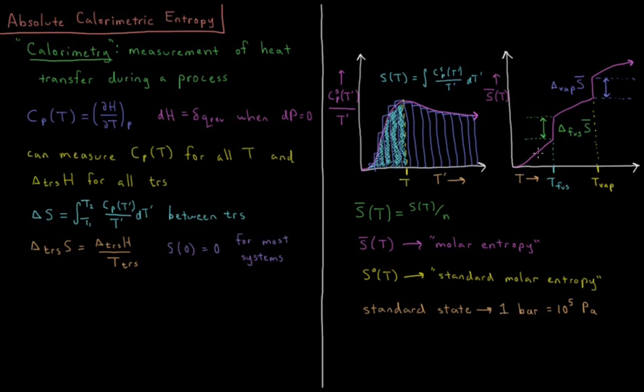Some quantities that we can define here: We have the molar entropy, which is s with a bar over it. As for any molar quantity, that's just the quantity divided by the number of moles of the substance. So it's the entropy per one mole of substance. s̄ equals s over n. s̄ is called the molar entropy.